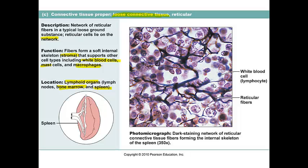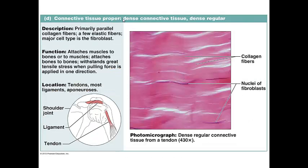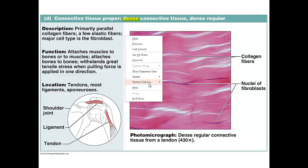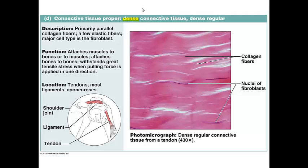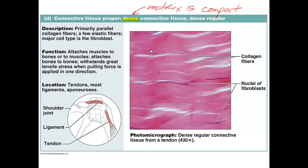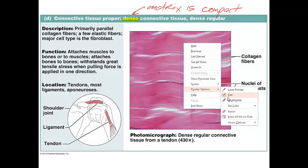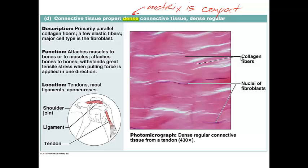Reticular connective tissue looks very distinctly different from the other two types of loose connective tissue. Those are the three types of loose connective tissue. We then have three types of dense connective tissue, which means there is very little space — the matrix is very compact. The first example is dense regular connective tissue, where collagen fibers are the main fibers. It's located in joints, making up ligaments and tendons.